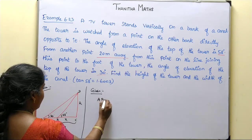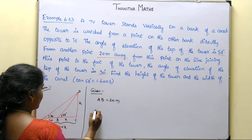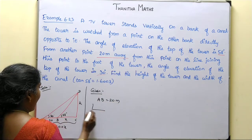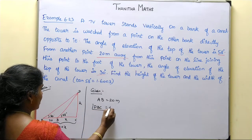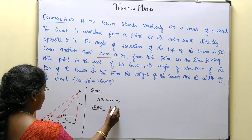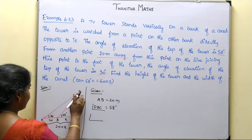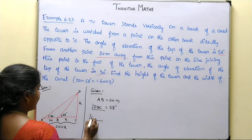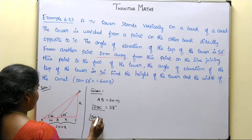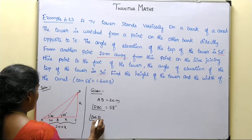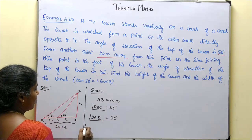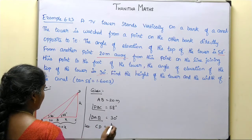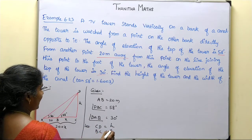Given: BC is equal to 20 meters. Angle DBC is equal to 58 degrees. Angle DAC equals angle DAB equals 30 degrees. Let CD equal h (the height of the tower) and BC equal x (the width of the canal).